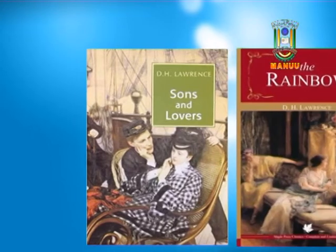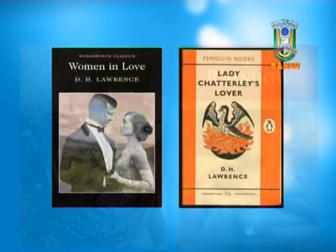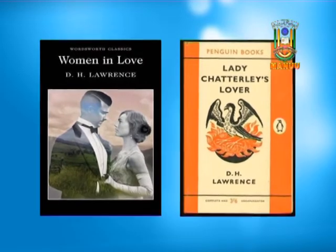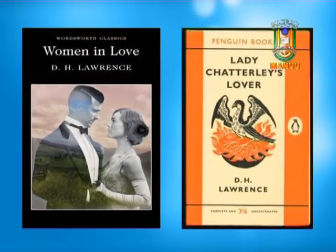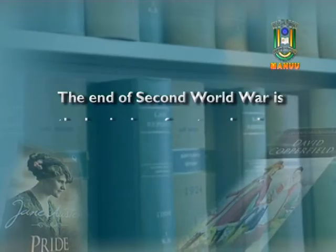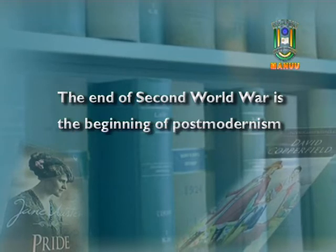D.H. Lawrence is another bold writer of the century who dealt with unusual subjects in his novels. Sons and Lovers, The Rainbow, Women in Love, and Lady Chatterley's Lover are some of his major works. These novels are remarkable not just for the psychological theories they are influenced by, but also for their insight into human relationships. The end of the Second World War marks the beginning of postmodernism in English literature.